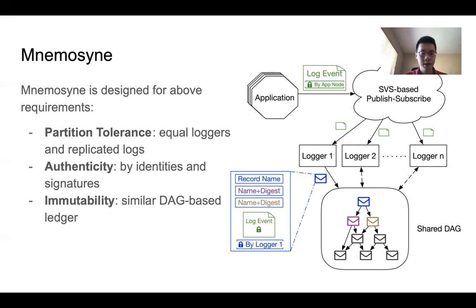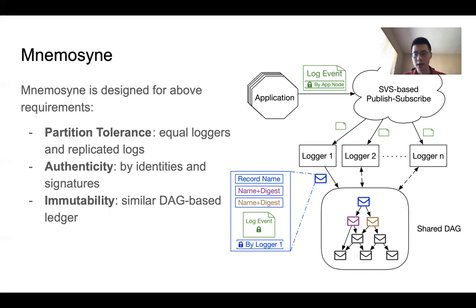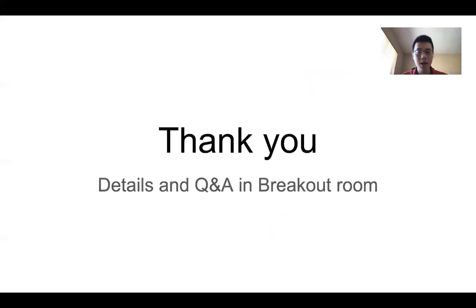For immutability, NAMMOSIGN uses a DAG-based ledger approach, where logs are organized in a record that also contains the name and digest of previous records. When placed in a DAG, each record ensures its digest is stored in all subsequent records indirectly, thus ensuring log events cannot be modified. Thank you.